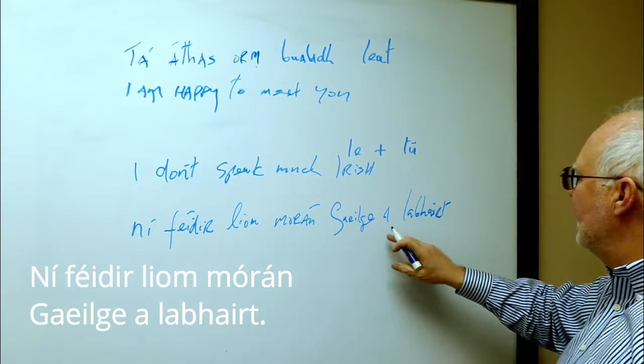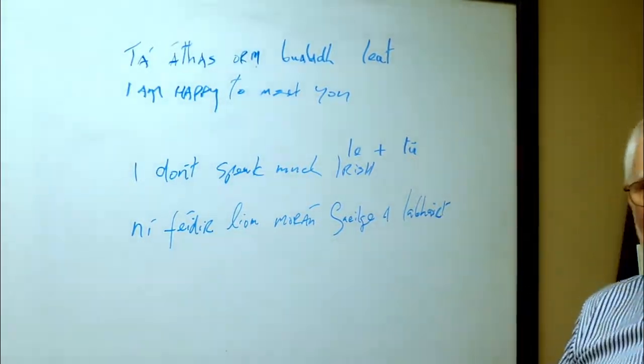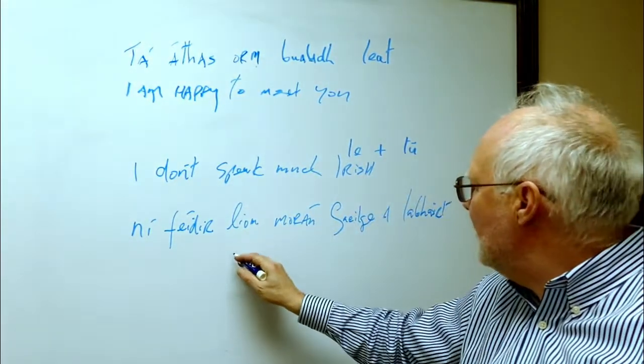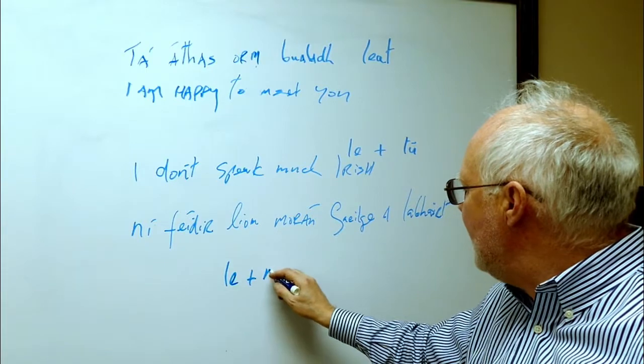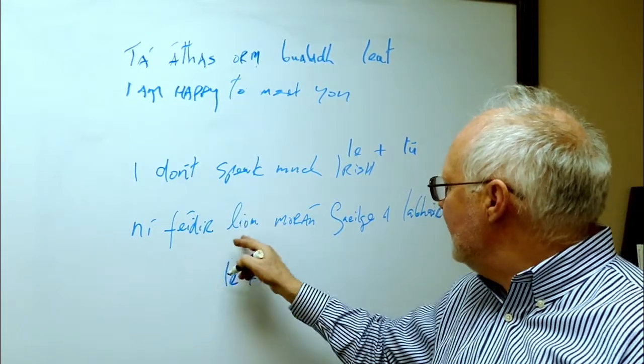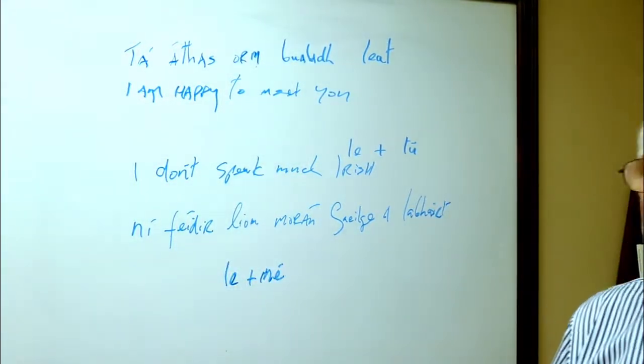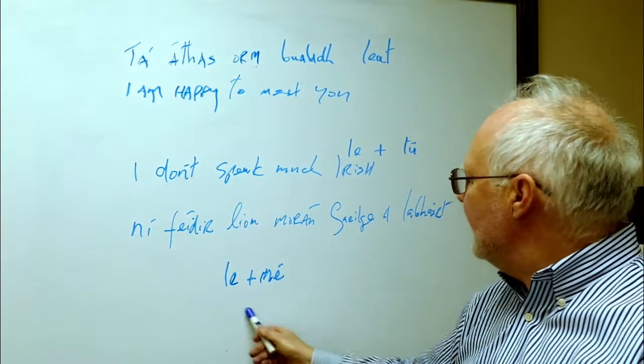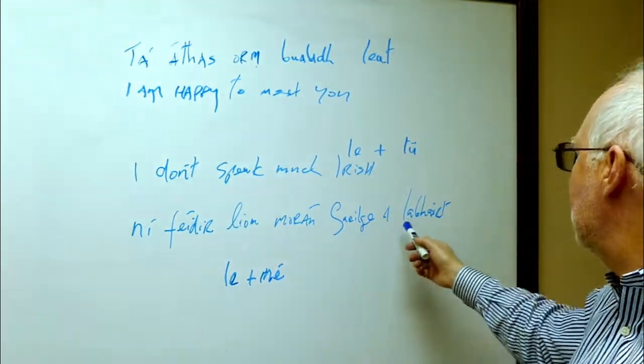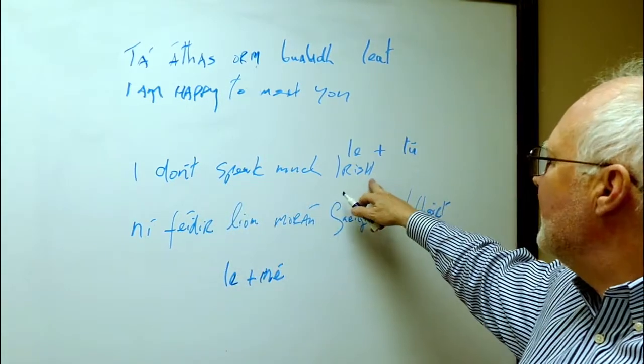Ni faid alam mooran ghaelga alawart, which is to speak. So Irish, to speak, I'm not able much. And again, the M here, if I remember what we did here, L plus tu. Well, this is L plus me. Lam. Ni faid alam, ni faid alam le me. It's the same thing. But again, it's a spoken language and the grammar gets usurped into the spoken word. So ni faid alam mooran ghaelga alawart. And it means I don't speak much Irish.